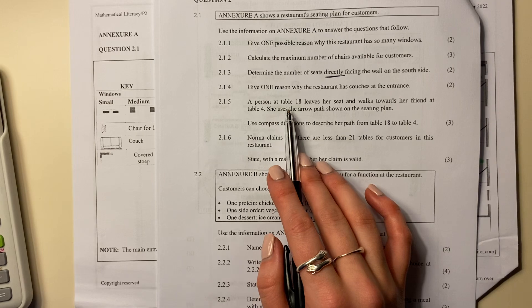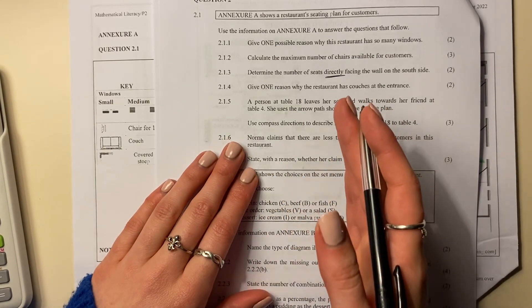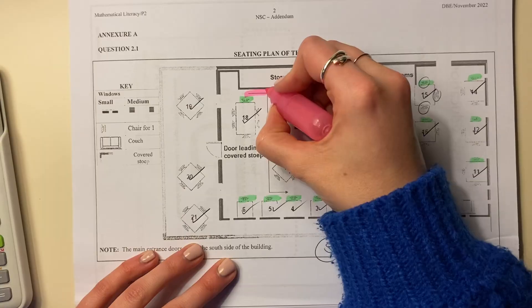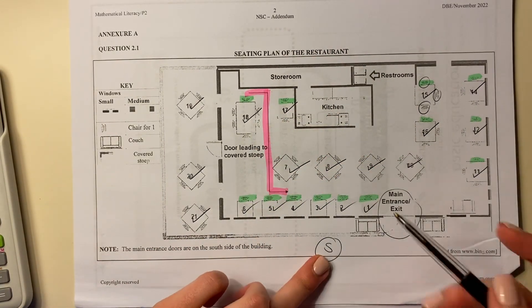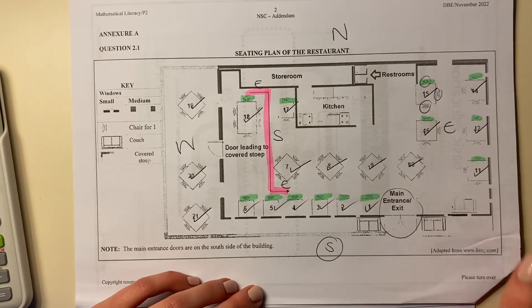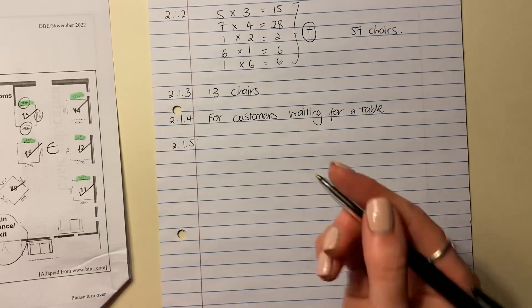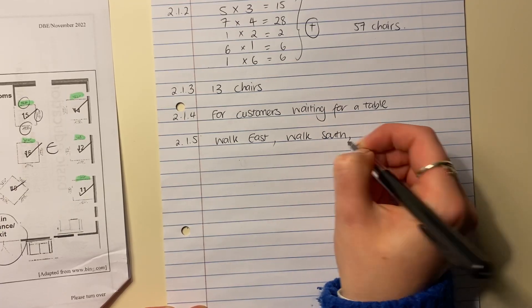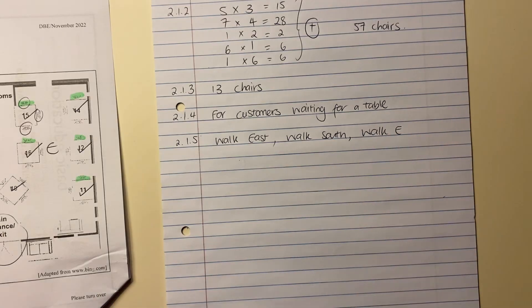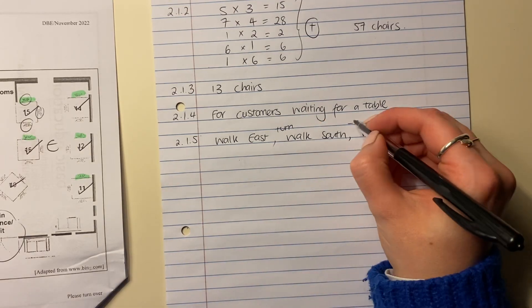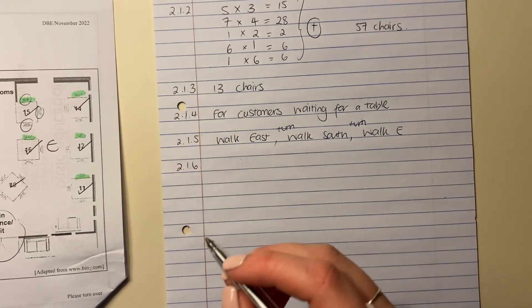2.1.5: A person at table 18 leaves her seat and walks towards her friend at table 4. She uses the arrow path shown on the seating plan. Use compass directions to describe her path from table 18 to table 4. We know this is south, so that's north, that's east, and that's west. She walks east, then she walks south, then she walks east. So you would say: walk east, walk south, walk east. That's where the marks are allocated.